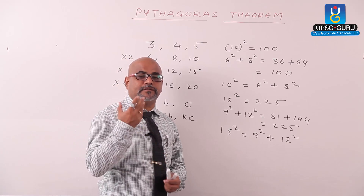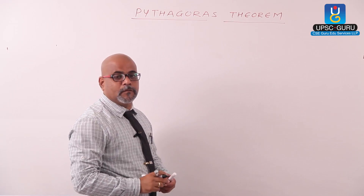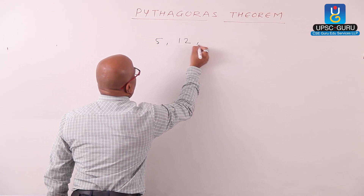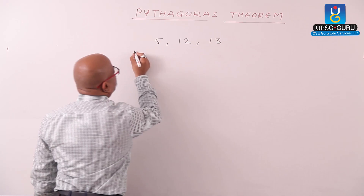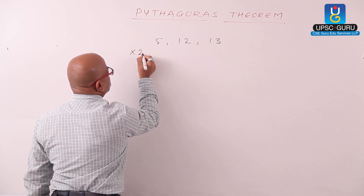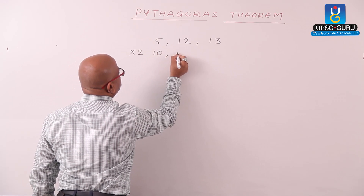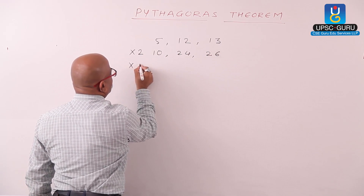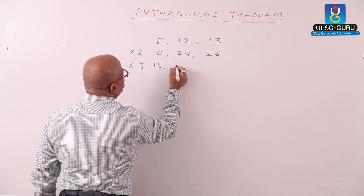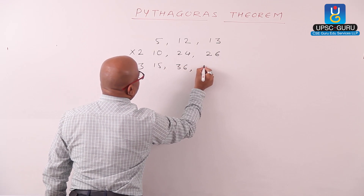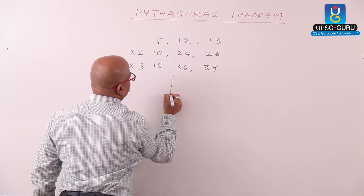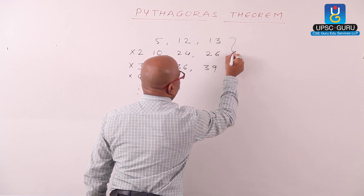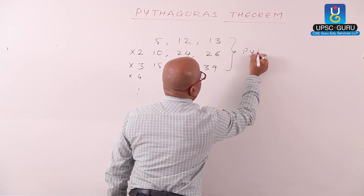Let us check some more Pythagorean triplets. One more common Pythagorean triplet is 5, 12, and 13. If we multiply all three numbers by 2 we get 10, 24, and 26. Multiply by 3: 15, 36, and 39. If we multiply by 4 and so on, all of these are Pythagorean triplets.